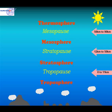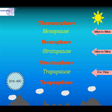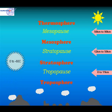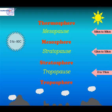Temperatures vary within each of these layers. In the troposphere temperatures typically range from about 20 to minus 60 degrees Celsius. In the stratosphere this ranges from about freezing to minus 60 degrees Celsius.